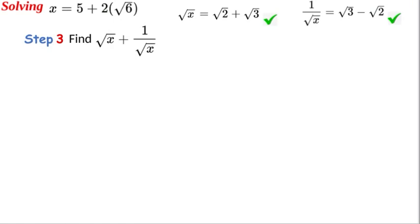This is very simple. All we need to do is add √2 + √3 and also √3 - √2. That's equal to 2√3.